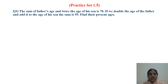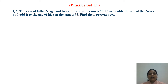The sum of father's age and twice the age of his son is 70. This question is related to ages — it is also called an age problem. If we double the age of the father and add it to the age of his son, the sum is 95. Find their present ages.